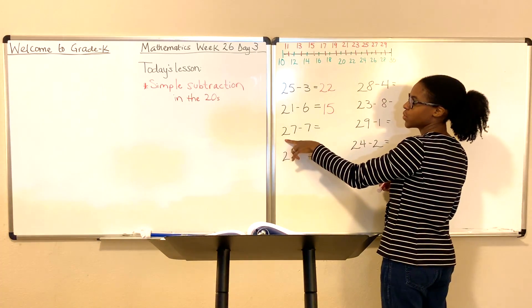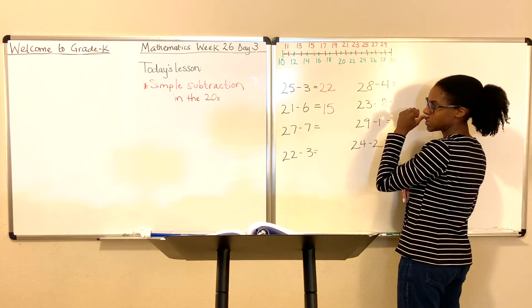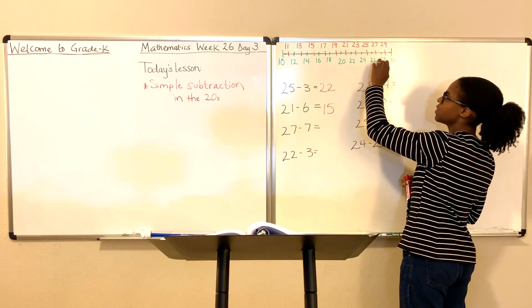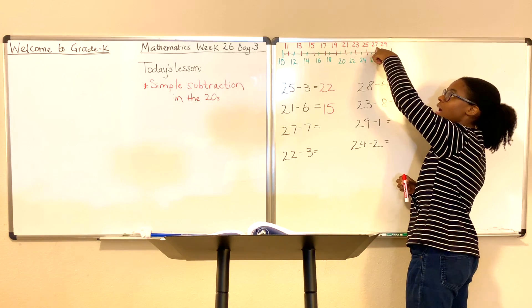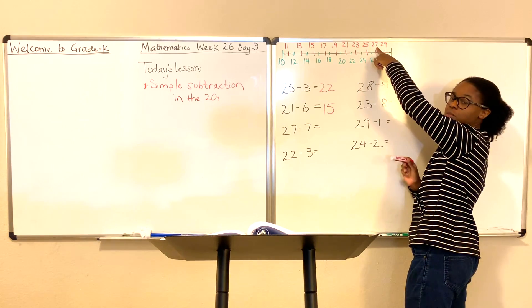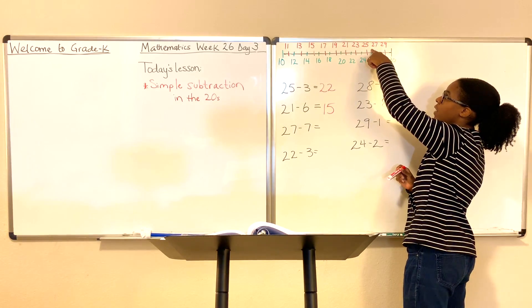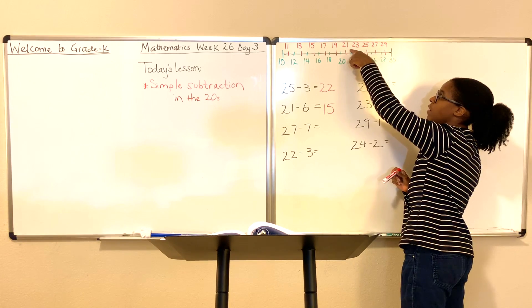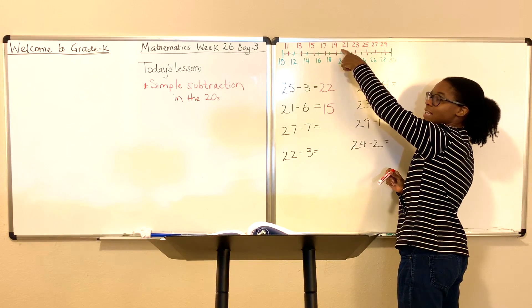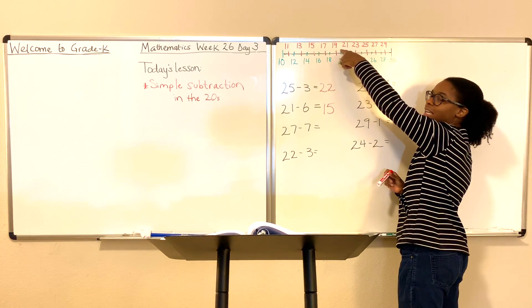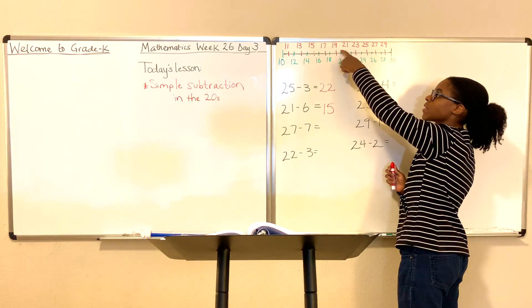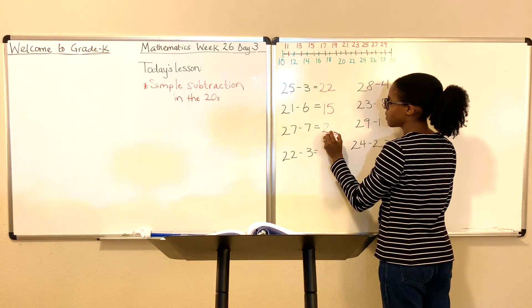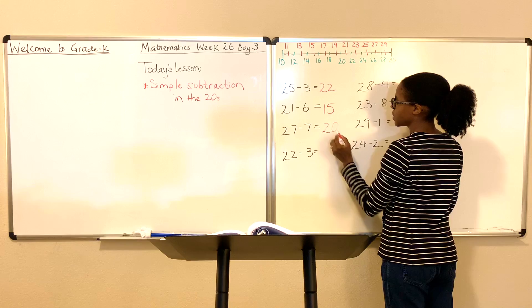27 minus 7. Come up to the number line, find the number 27, and then count backwards by seven: one, two, three, four, five, six, seven. What number does the line land on? It lands on 20. Good job — 27 minus 7 is 20.